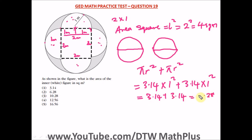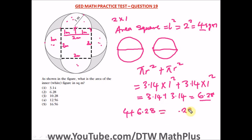3.14 plus 3.14 equals 6.28 square meters for the two circles. So the total area of the inner white figure is 4 plus 6.28, which equals 10.28 square meters. The correct answer is option 3: 10.28 square meters.